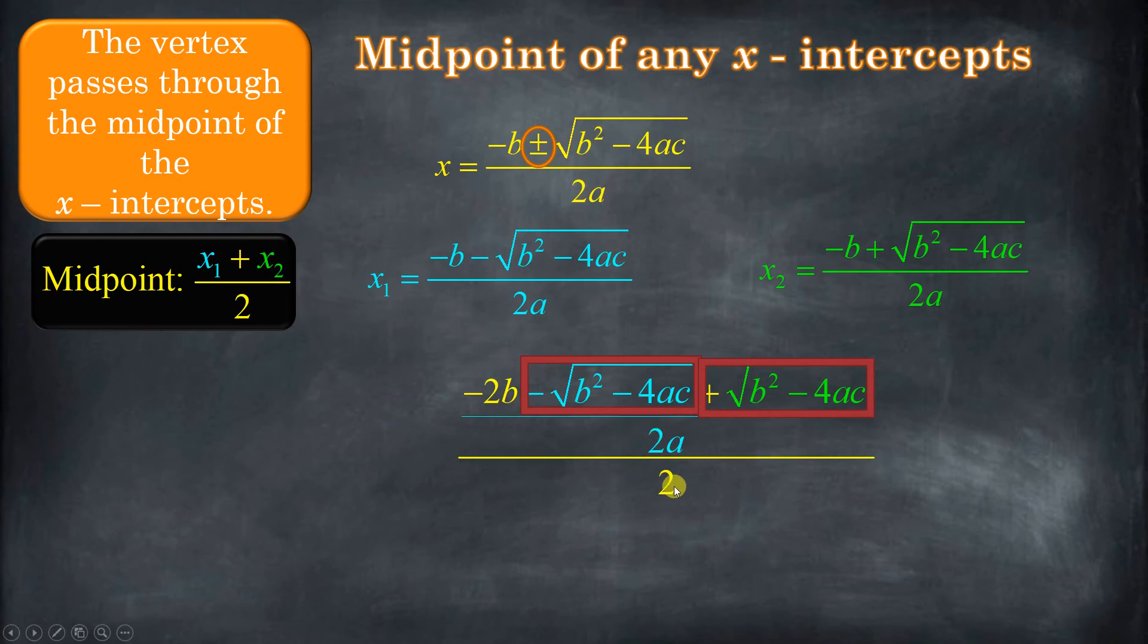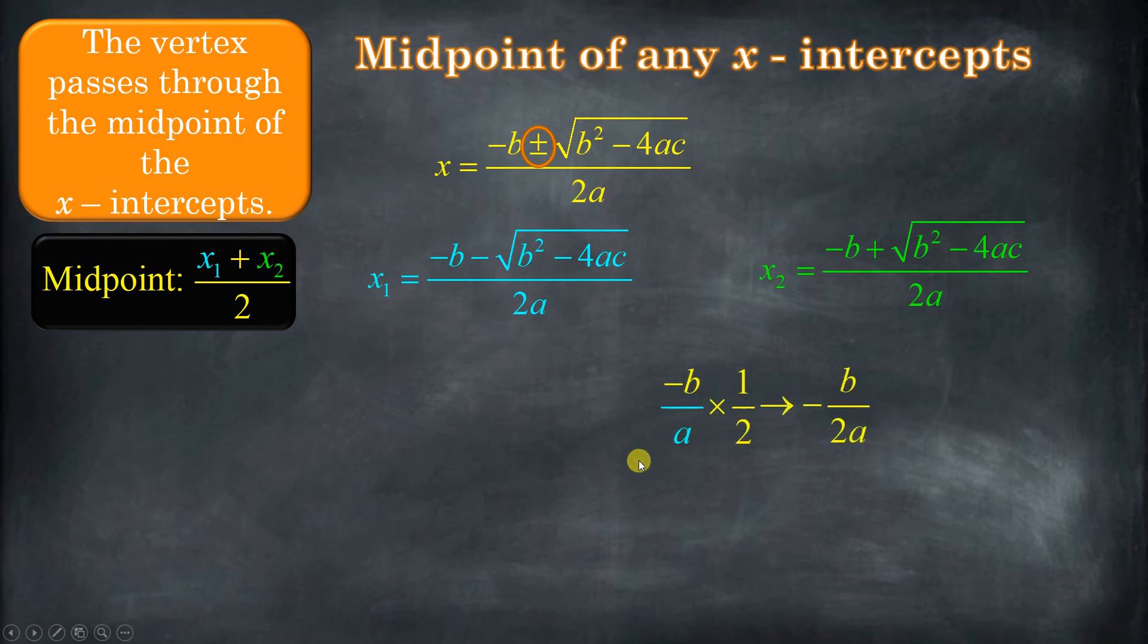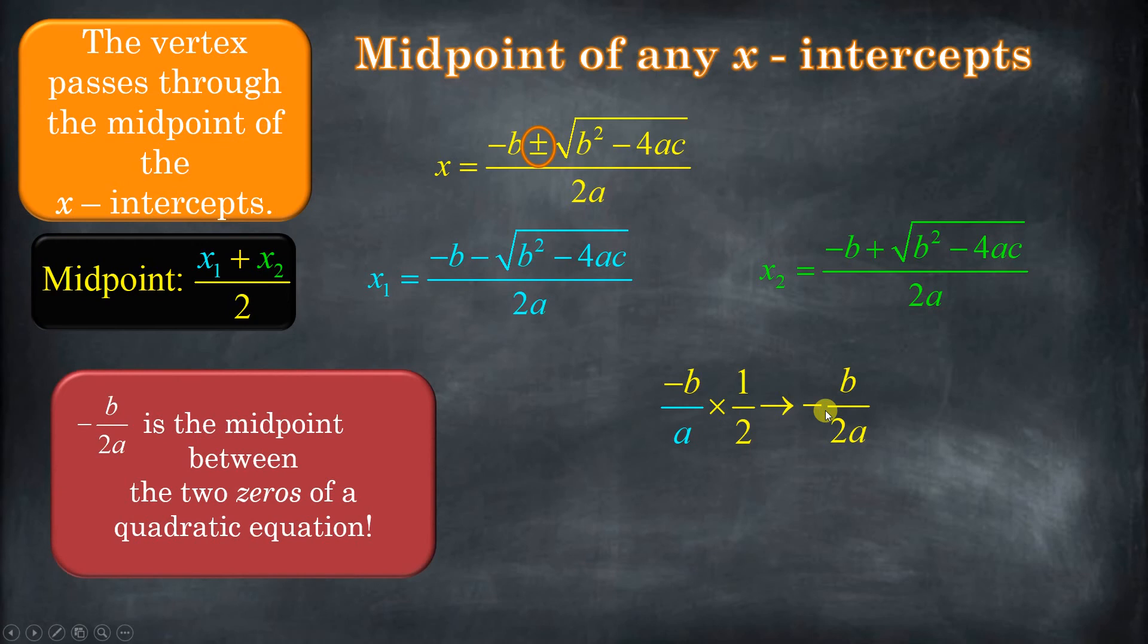We can reduce this negative 2 and this 2. And now this is negative b divided by a, and that whole thing divided by 2. Divided by 2 is the same as multiplying by the reciprocal. And when you put that together, you get negative b over 2a. So this is the midpoint between any two zeros of a quadratic equation. Now, I say zeros here because you might not have x-intercepts. They might be imaginary solutions. But this is still going to be the midpoint.